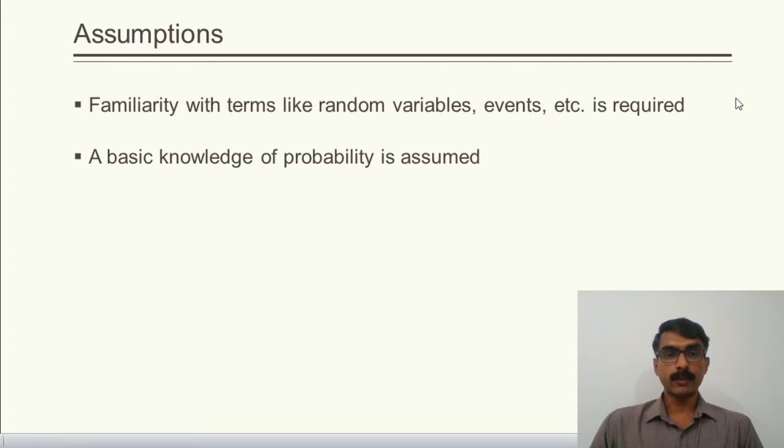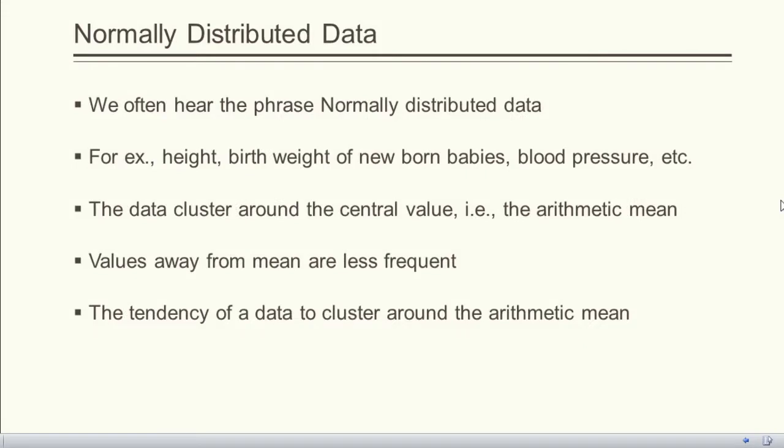To better understand the class, familiarity with terms like random variables and events is required, along with a basic knowledge of probability. We often hear the phrase 'normally distributed data.' For example, height and birth weight of newborn babies, blood pressure, etc. are distributed normally. For normally distributed data, the data cluster around the central value — the arithmetic mean — and values away from the arithmetic mean are less frequent. We can describe normality as the tendency of data to cluster around the arithmetic mean.